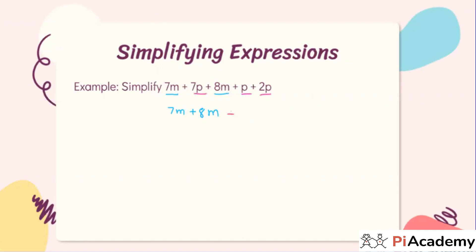Here we have three p terms: 7p plus another p term and another 2p term. Now you can combine these. This is nothing but what? 10p. Right, so the answer is 15m plus 10p. It's fine, you can write like this as well. The order does not matter here.